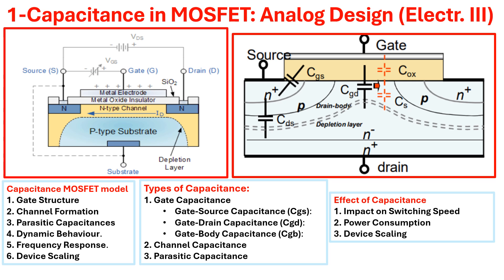Another important aspect is power consumption. During switching, the energy consumed is directly proportional to the capacitance and the square of the voltage. Therefore, understanding and minimizing capacitance is vital for reducing power consumption in both analog and digital electronics.